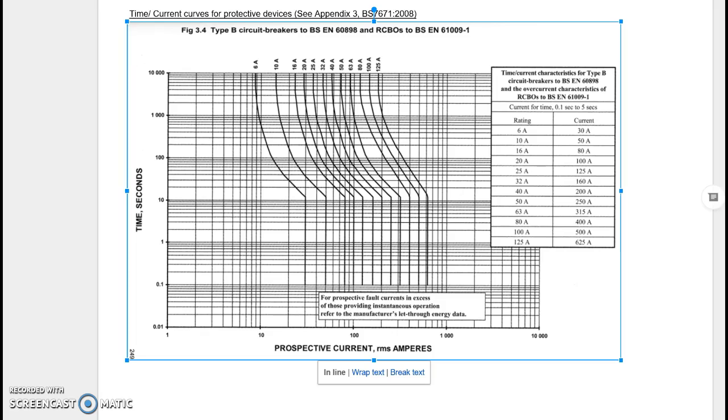Finally, our type B 6 amp device needs a current of 30 amps. Quick overview of our protective devices there. I hope you found that useful and I hope to speak to you guys again. Take care.